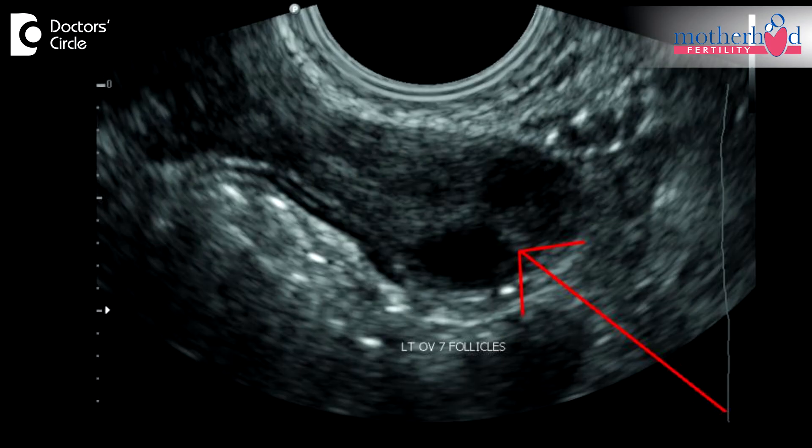In this procedure we give ovulation induction drugs wherein injections are given to the female partner to grow the follicles. When the follicles are growing we need to monitor the growth of the follicle, and this is done by serial ultrasound. Serial ultrasound are used to monitor the growth of the follicle and also to know how many follicles have grown. Ultrasound monitoring is also used to time the IUI procedure.